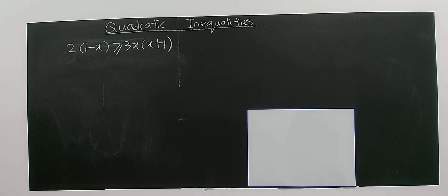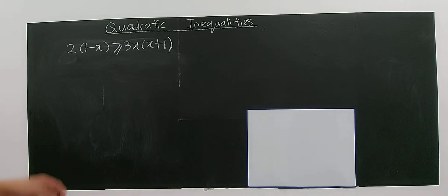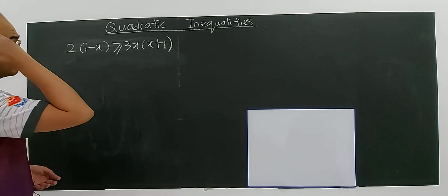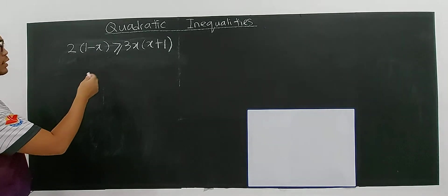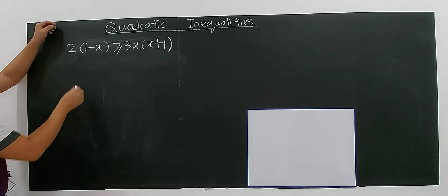Alright, let's move on to these examples under quadratic inequalities. For this case, you have to rearrange first so that you can see whether it's a linear inequality or quadratic inequality.